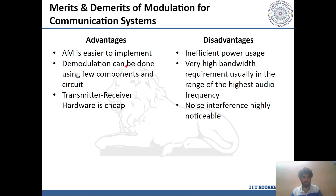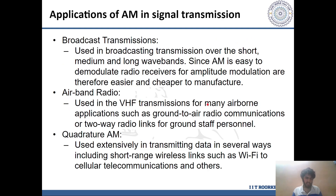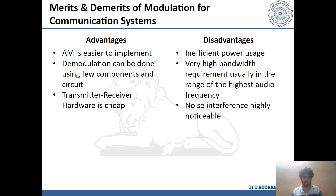The following table summarizes the advantages and disadvantages of AM modulation in communication systems. AM is very easy to implement since the circuitry involved is not complex and is comparatively cheap. It is commonly used in broadcasting over short, medium, and long wavebands, and since AM is easy to demodulate, receivers are therefore easier and cheaper to manufacture. AM-based modulation is also used in airband radios for airborne applications such as ground-to-air radio communications. However, interference is quite significant, and the bandwidth of the channel is quite large, often equivalent to the highest audio frequency.